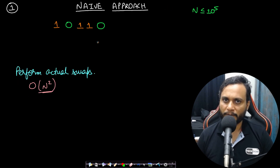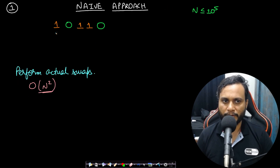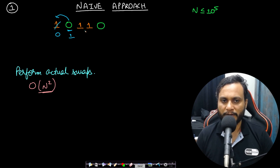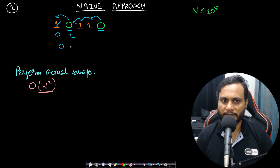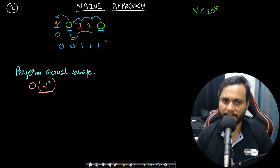Using the naive approach, you can actually perform the swaps. Whenever you see a zero, you place it to the leftmost one by swapping. When you see the next zero, you keep swapping it past all the ones. So the state eventually becomes '00111' — the ones slide to the right hand side by one position. This is the naive approach.